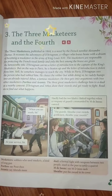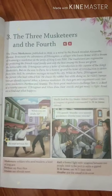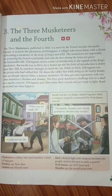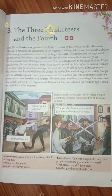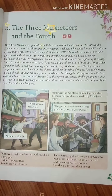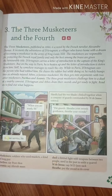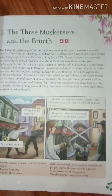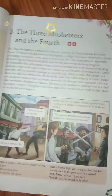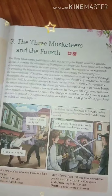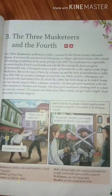Hello my dear 7th class students. Welcome back to your English Literature class. Today we will cover Chapter 3, 'The Three Musketeers and the Fourth.' We have already completed Chapters 1 and 2 and the poem.